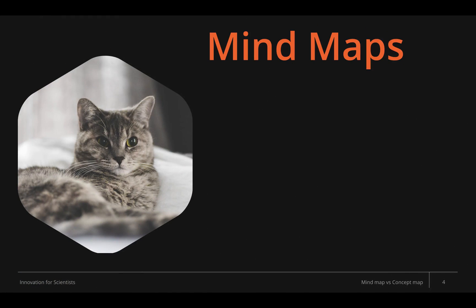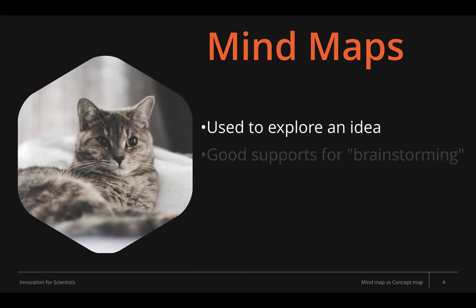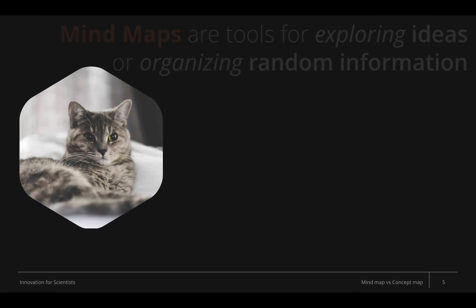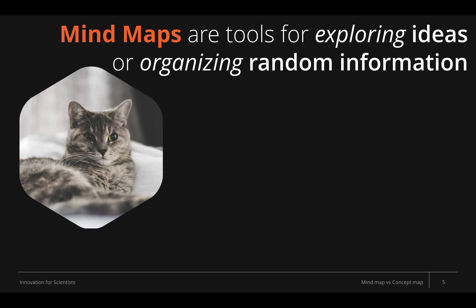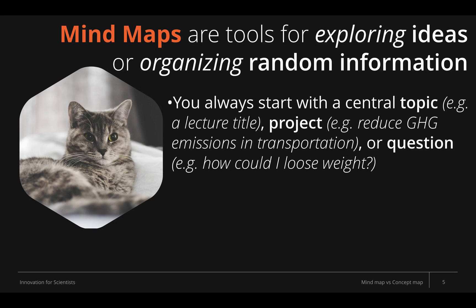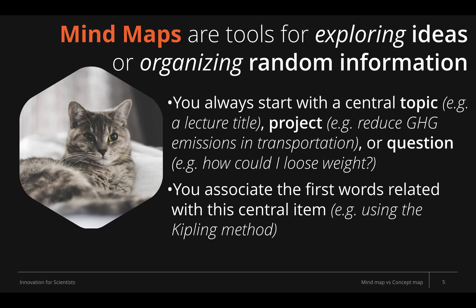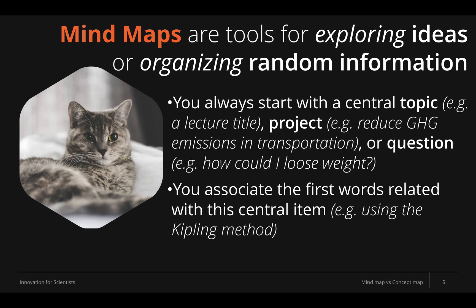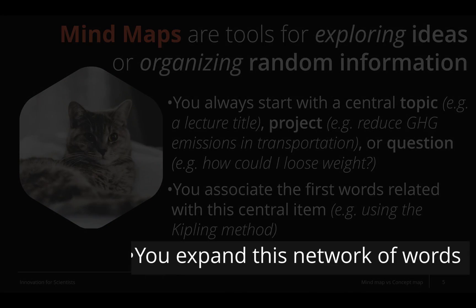Mind maps are mostly used when you want to explore an idea. They are very good support for brainstorming, creative thinking, and the way they are built is usually to connect simple words. Mind maps are tools for exploring ideas or organizing random information. In a mind map, you always begin with a central topic — for instance, the title of a letter, the name of a project like reducing greenhouse gas emissions in transportation, or a question like how could I lose weight. Then from this central topic, you associate the first words related with this central item.